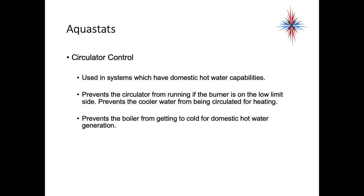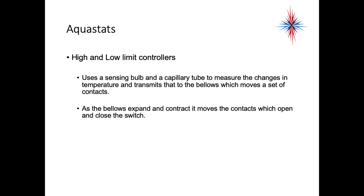We have to maintain boiler temperature for domestic hot water. The aquastat also includes circulator controls, used in systems which have both domestic hot water capability. It prevents the circulator from running if the burner is on the low limit side, prevents cooler water from being circulated for heating, and prevents the boiler from getting too cold for domestic hot water generation. This type of aquastat uses a sensing bulb and a cap tube to measure temperature changes and transmit that to bellows, which move a set of contacts — as the bellows expand and contract, the contacts open and close a switch.